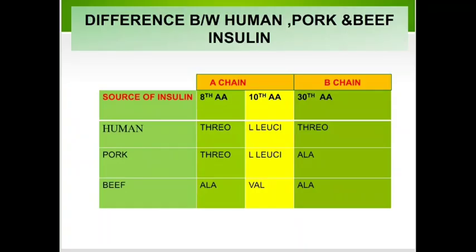There are three sources of insulin: human, pork, and beef. In human insulin, the A chain positions 8, 10, and 13 have threonine, leucine, and threonine respectively. In pork insulin, positions 8 and 10 are similar to human, but the 30th amino acid of the B chain has alanine. Beef insulin has alanine, valine, and alanine at the differing positions, making it entirely different from human and pork insulin. Human and pork insulin are similar, with the only difference being threonine versus alanine at position 13.